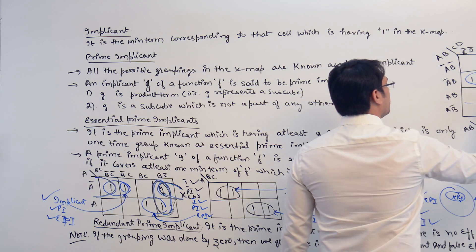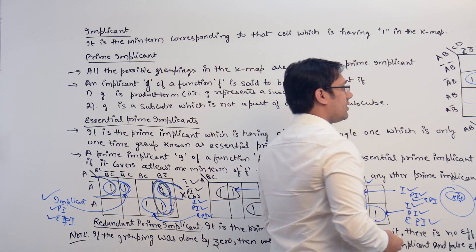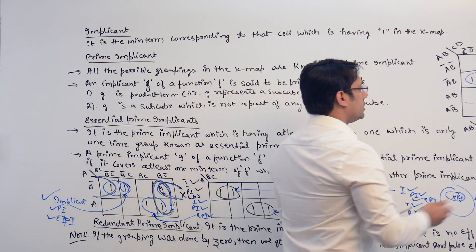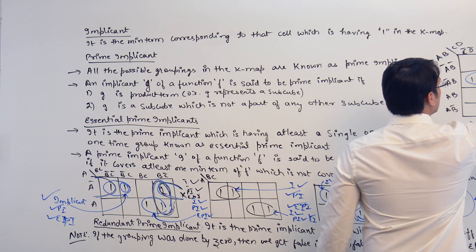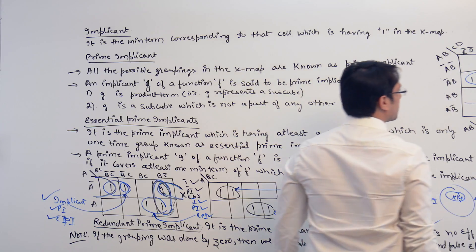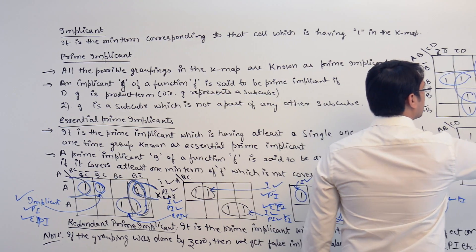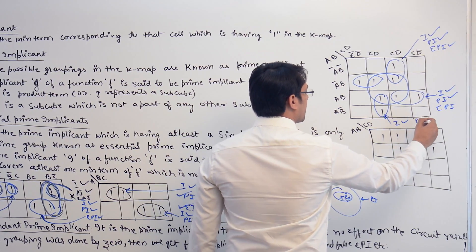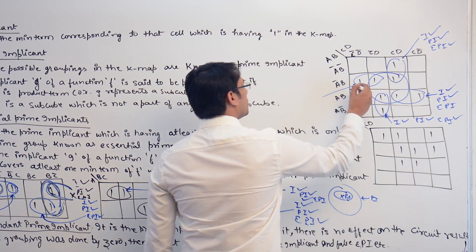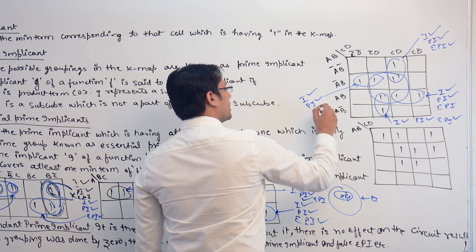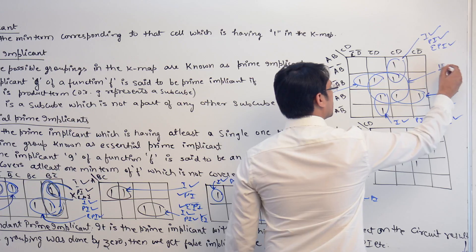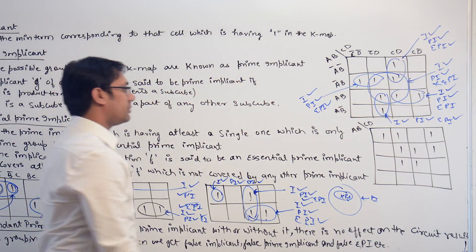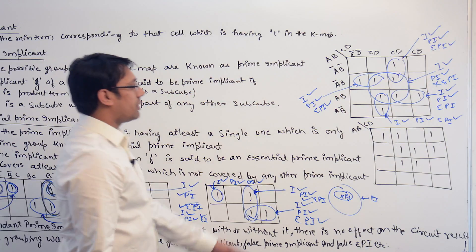Now if you check these k-maps, we can have subcubes like this, like this, like this, like this, as well as we can make smaller subcubes inside the bigger subcubes. This one is an implicant, it is a prime implicant, as well as it is an essential prime implicant. This one is an implicant, it is a prime implicant, as well as it is an essential prime implicant. This bigger one is an implicant and it is also a prime implicant, but it is not an essential prime implicant.